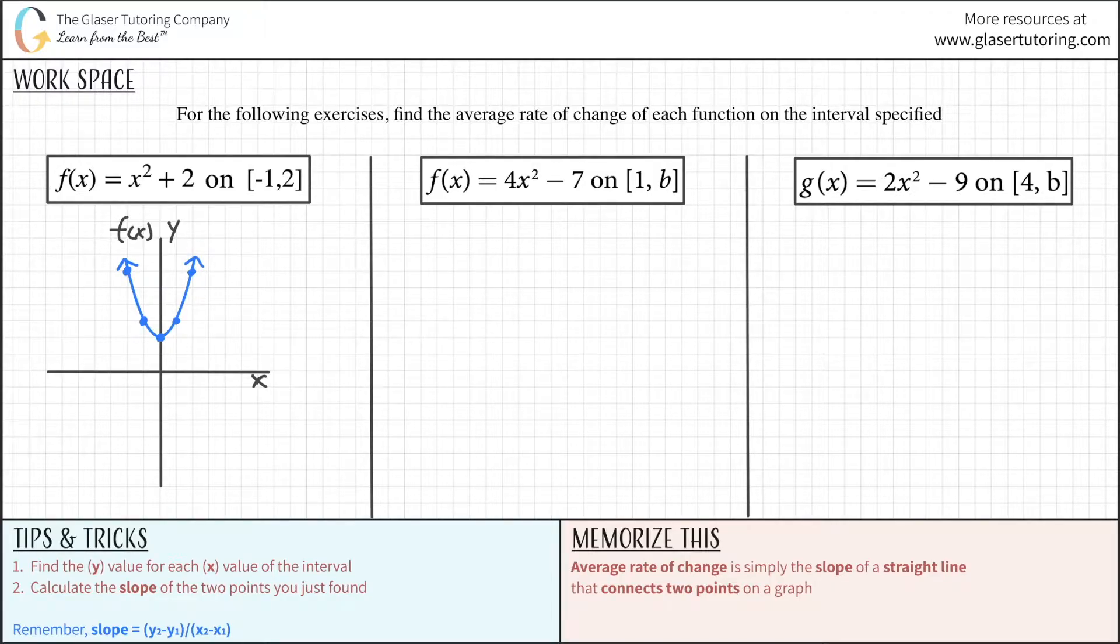So now let's say you have to find the average rate of change. You want to find the average rate of change between this point and that point. All you have to do is find the slope of this line. That's it. Let's say you want to find the average rate of change from this point to this point. All you have to do is find the slope of a straight line that connects those two points. Now the two points of interest we are looking at for the first problem is when x is negative 1 and when x is 2.